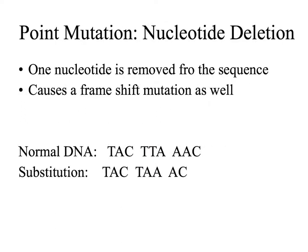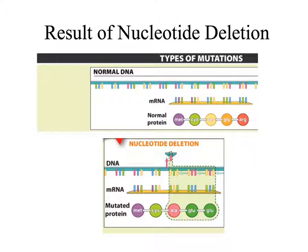Our third type of point mutation is a nucleotide deletion. This is when one nucleotide is removed from the sequence, causing another frameshift mutation. With the removal of one base, we again change the subsequent codons. In this example, we remove a single base out of the DNA sequence. Every codon after that is altered, which means that every amino acid translated from those codons will also be different.